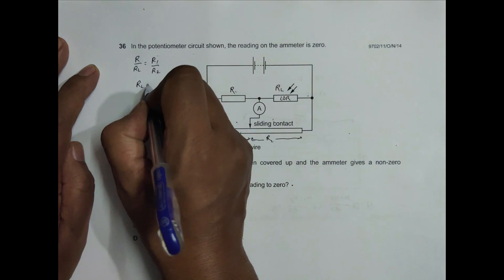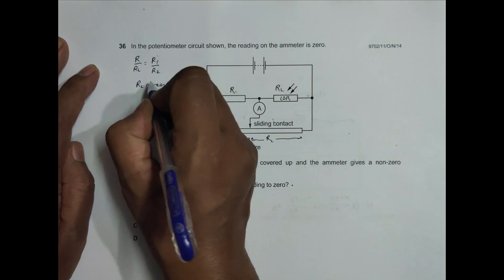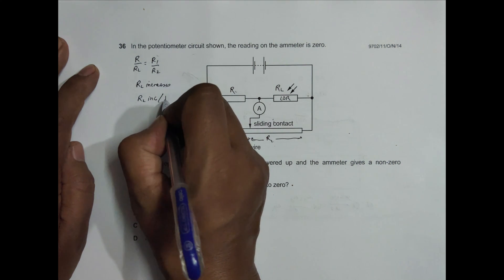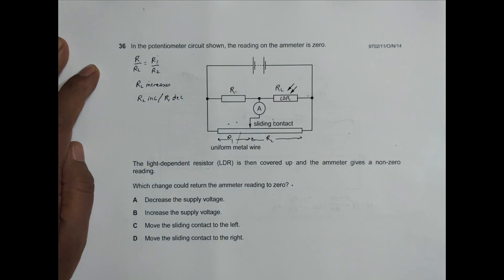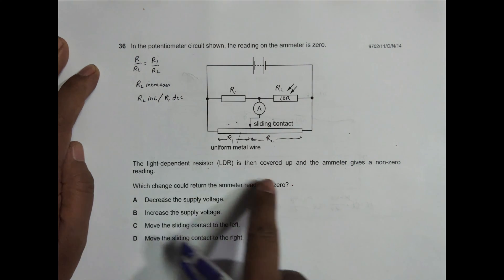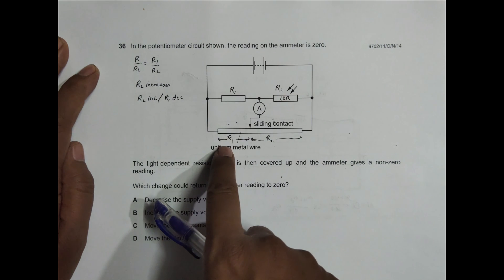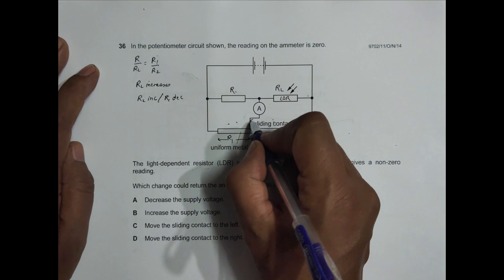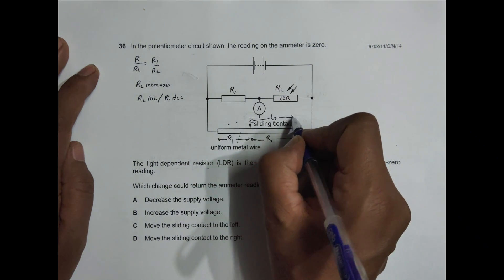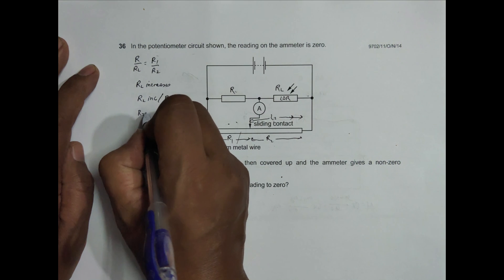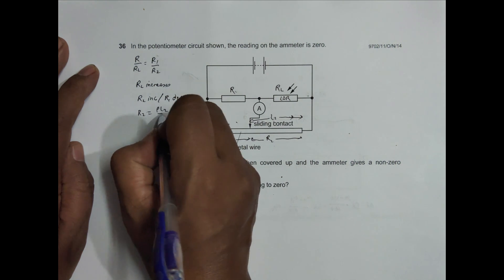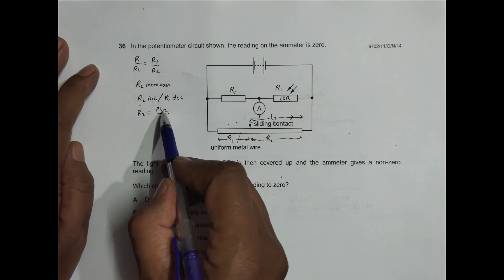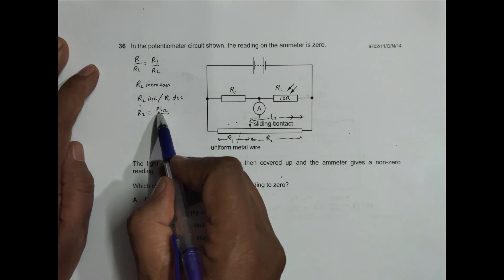When the LDR is covered up, R_L increases. To restore the balanced condition with R_L increased, R2 must increase or R1 must decrease. Now, R2 is given by the formula R2 equals rho times L2 divided by A, where A is the cross-section. If R2 should increase, then L2 must increase since A and rho remain the same.